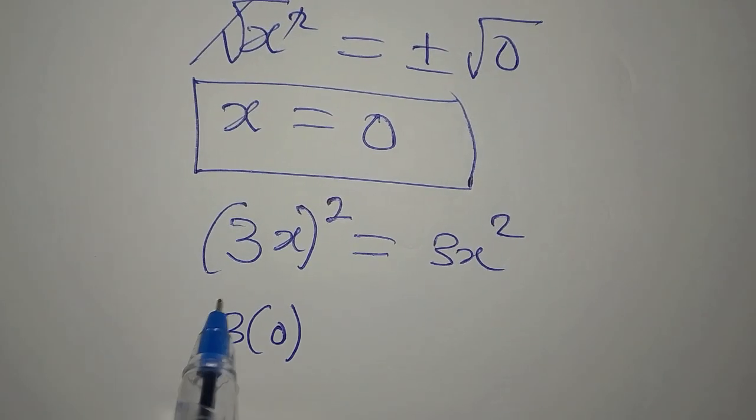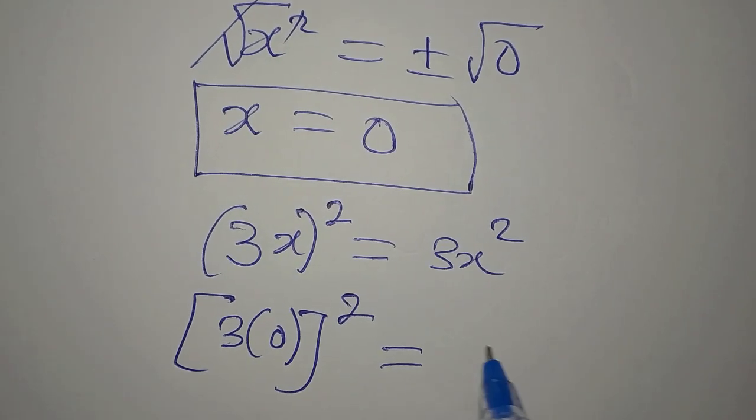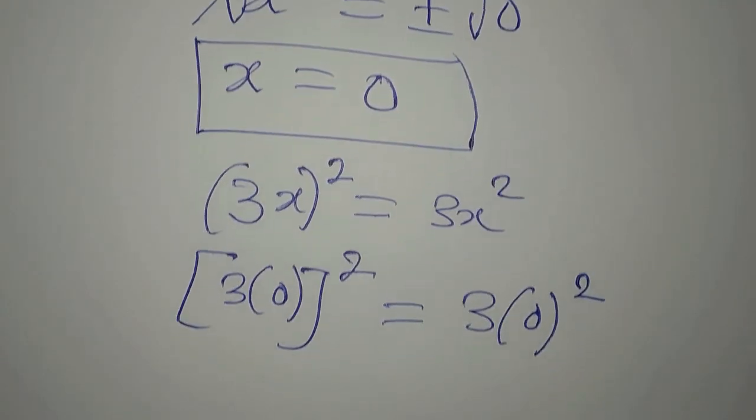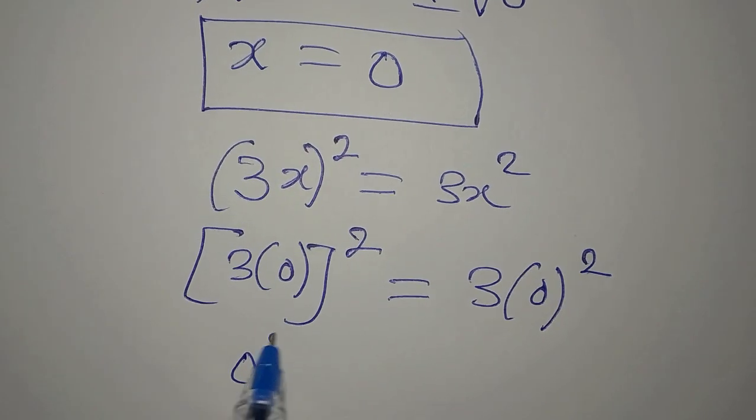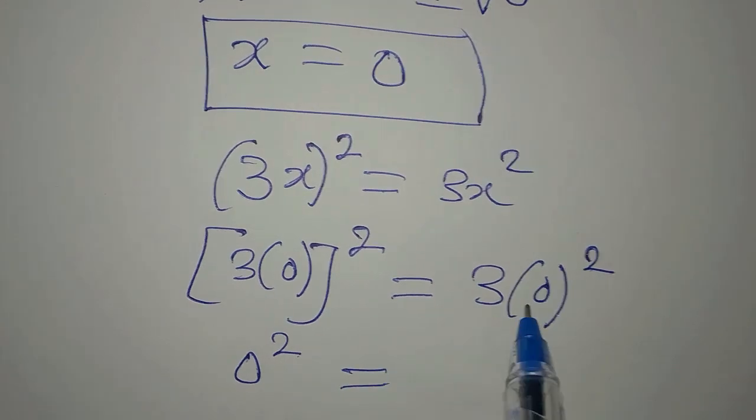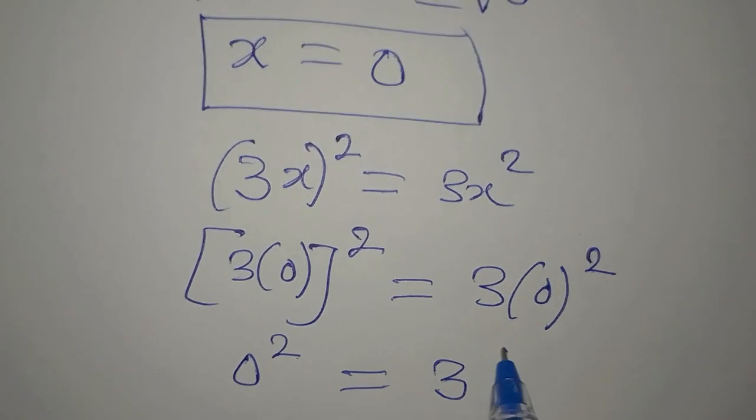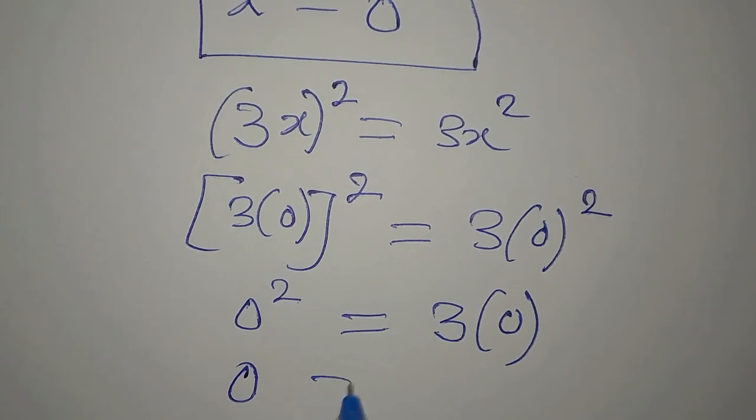So from here, 3 times zero is zero, then we have square on it. Then here you will get the zero first, zero squared is zero, so we have 3 times zero. Now we have zero squared to be zero.